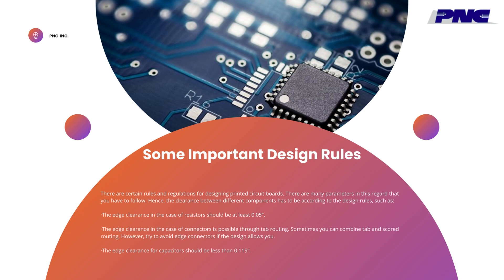There are certain rules and regulations for designing printed circuit boards. The clearance between different components must be according to the design rules, such as: the edge clearance in the case of resistors should be at least 0.05. The edge clearance in the case of connectors is possible through tab routing, and sometimes you can combine tab and scored routing. However, try to avoid edge connectors if the design allows you. The edge clearance for capacitors should be less than 0.119.